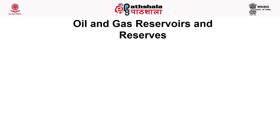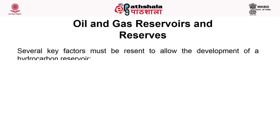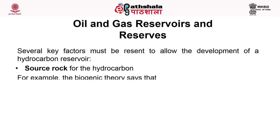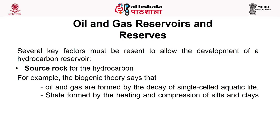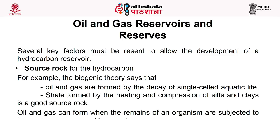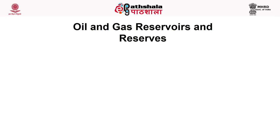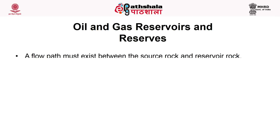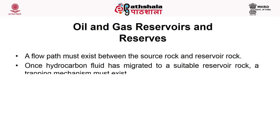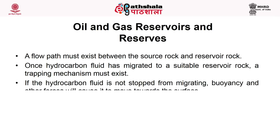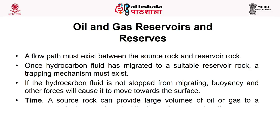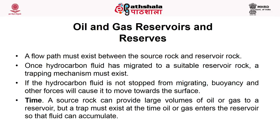Several key factors must be present to allow the development of a hydrocarbon reservoir. One factor is source rock — the biogenic theory states that oil and gas are formed by the decay of single-cell aquatic life. Oil and gas can form when remains of organisms are subjected to increases in pressure and temperature. A flow path must exist between source rock and reservoir rock. Once hydrocarbon fluid has migrated to a suitable reservoir rock, a trapping mechanism must exist. If the hydrocarbon fluid is not stopped from migrating, buoyancy and other forces will cause it to move towards the surface. A source rock can provide large volumes of oil or gas, but a trap must exist at the time oil or gas enters the reservoir so that fluid can accumulate.